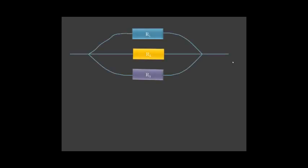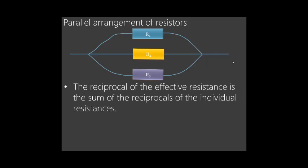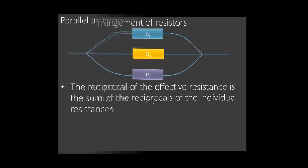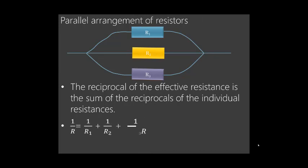For the parallel arrangement of resistors, remember that the reciprocal of the effective resistance is the sum of the reciprocals of the individual resistances. We don't add resistances directly here; we use reciprocals: 1/R = 1/R1 + 1/R2 + 1/R3. If there are four resistors, continue with + 1/R4. The reciprocal of the effective resistance equals the sum of the reciprocals of individual resistances.